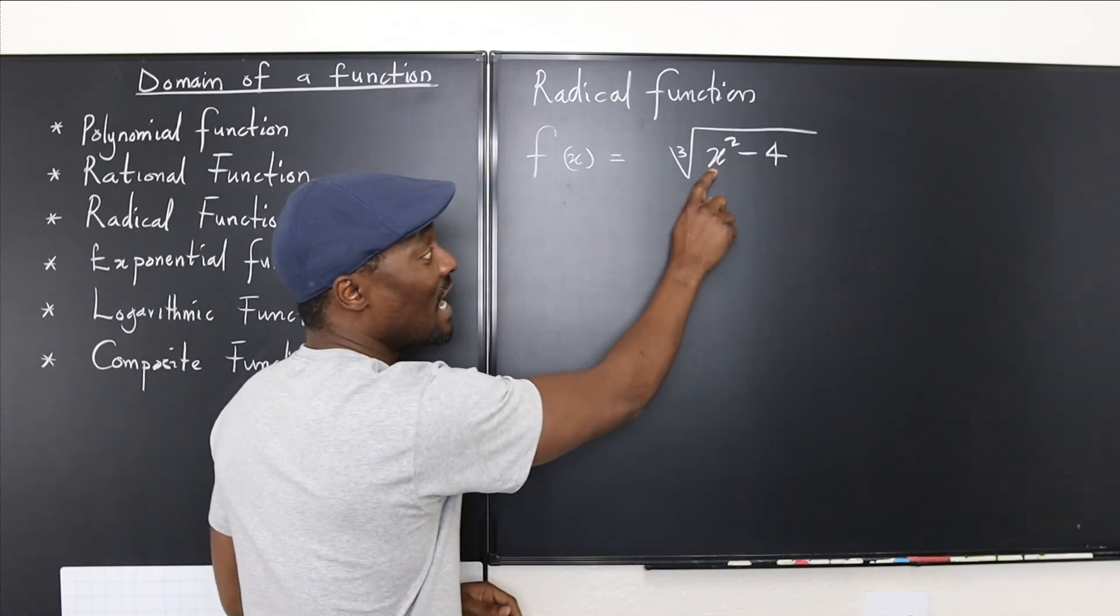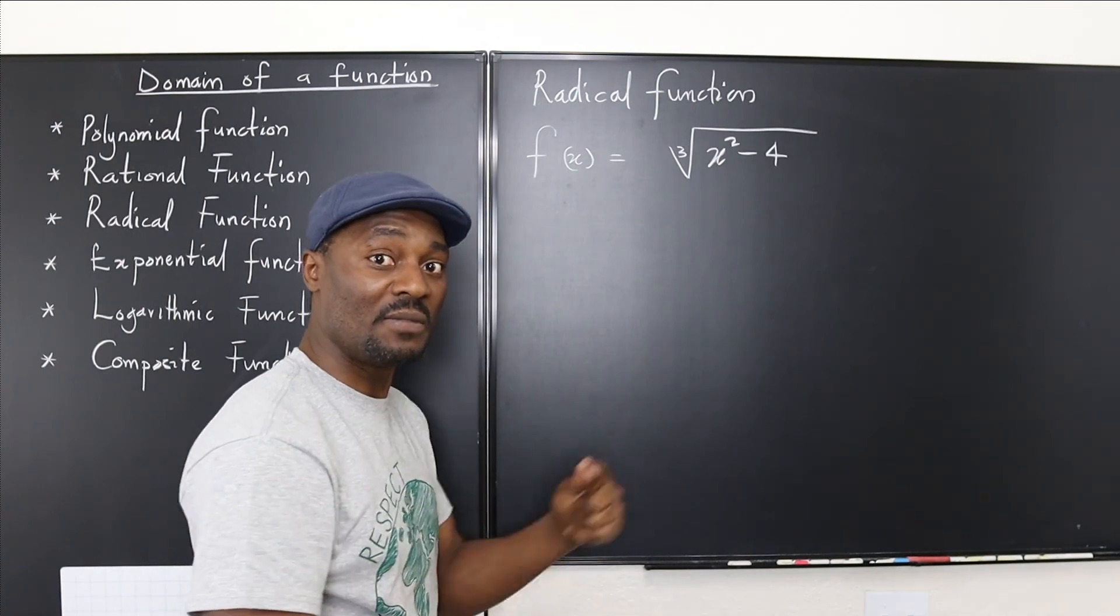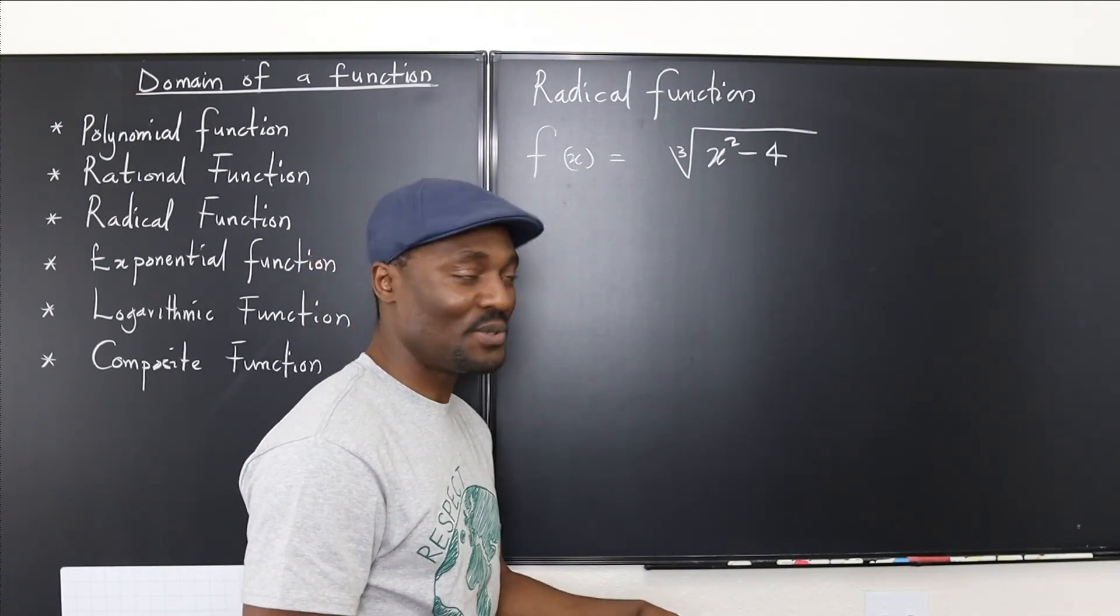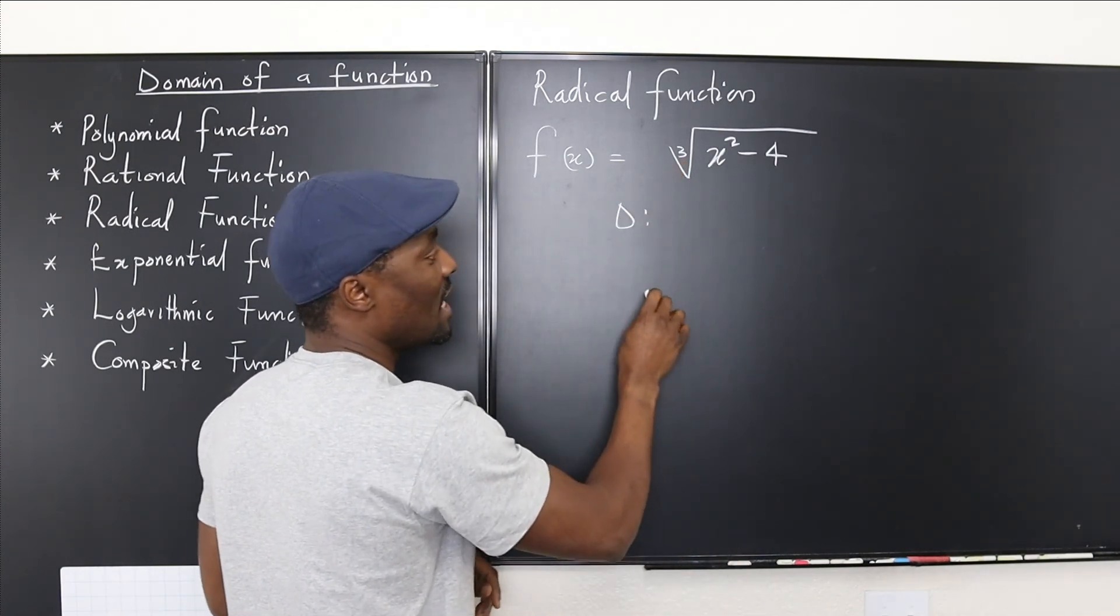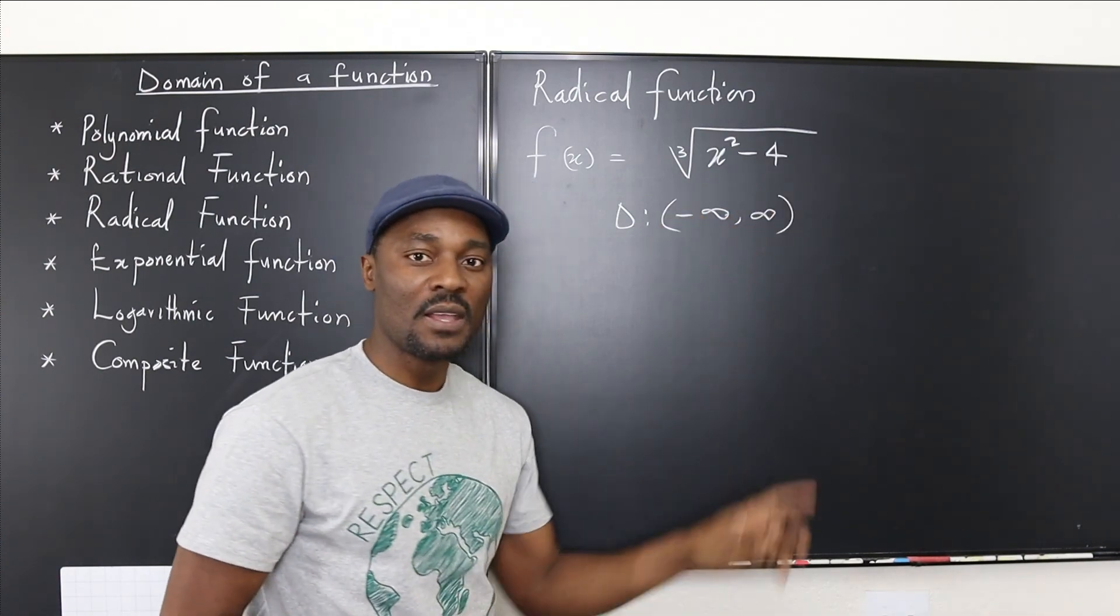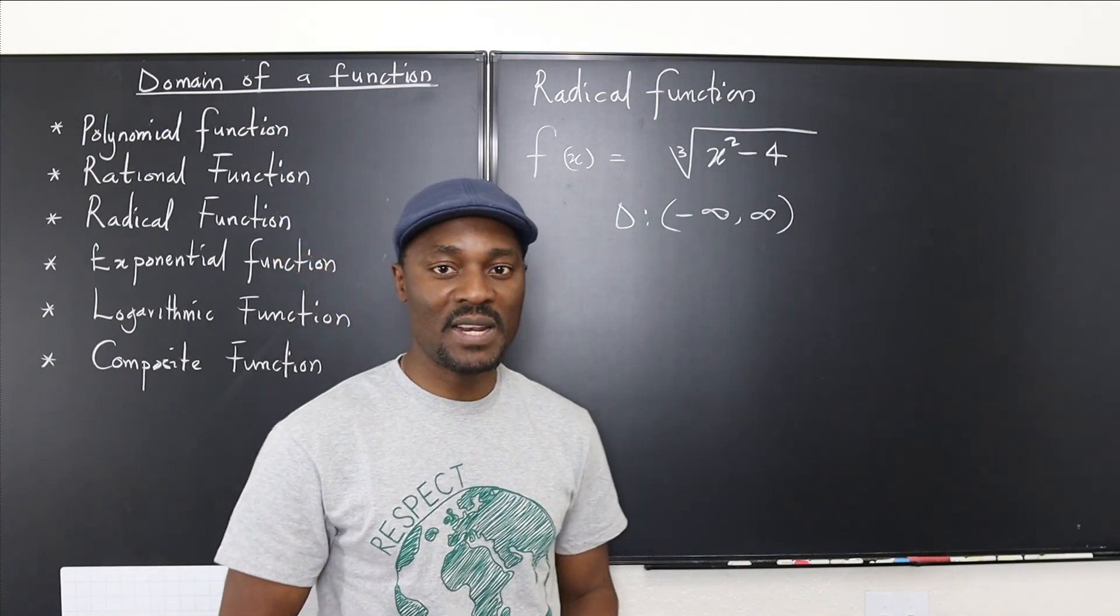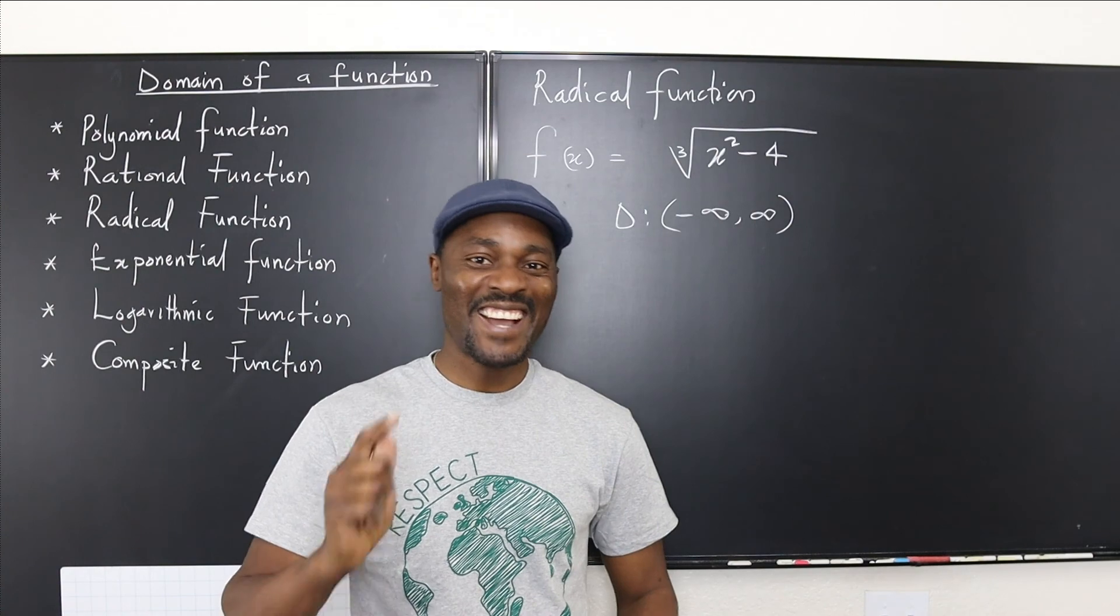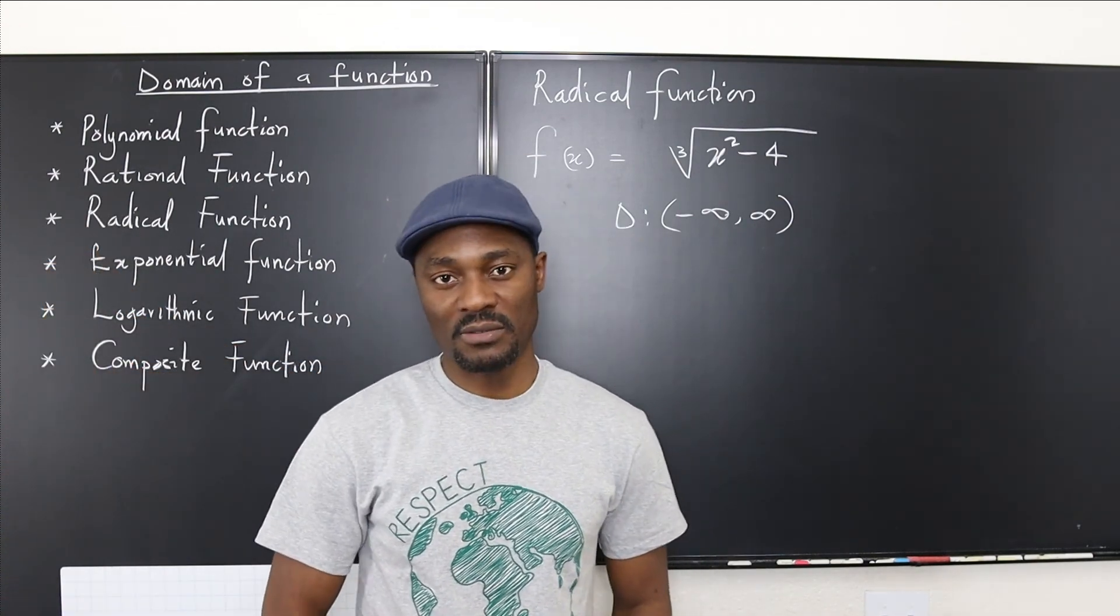So the domain of this function, because it doesn't matter if this is negative. If you end up with a negative number, you can take the cube root of a negative number. You just can't take the square root of a negative number or any even root. So now that it's odd, you're good. So the domain of this function is basically from negative infinity to infinity. Remember that if the root is odd, the domain is from negative infinity to positive infinity for any radical function. I'll see you in the next part of the series, and we'll be talking about exponential and logarithmic functions.